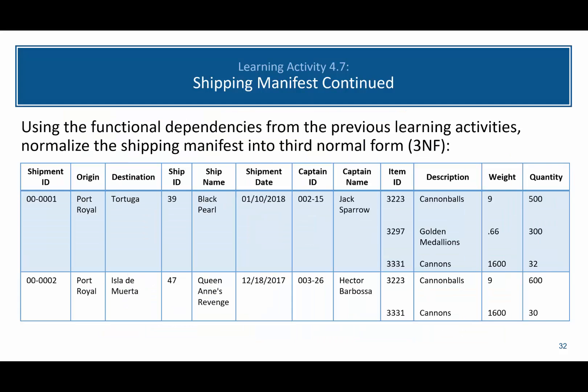Now I want you to use the functional dependencies from the previous learning activities to normalize this shipping manifest into third normal form. Walk through the steps to convert from unnormalized form all the way through third normal form. You can use the server to model using a relational model. Complete this on your own, pause the video, and then come back to compare your answers.